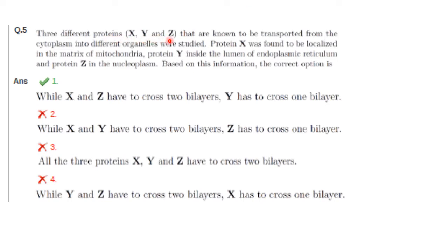Next question: three proteins X, Y and Z transported from the cytoplasm into different organelles were studied. Protein X is localized in the matrix of mitochondria, protein Y inside the lumen of the endoplasmic reticulum, and protein Z in the nucleoplasm. The question asks how many bilayers each protein must cross. The endoplasmic reticulum is composed of one continuous membrane bilayer, so protein Y must cross only one bilayer.